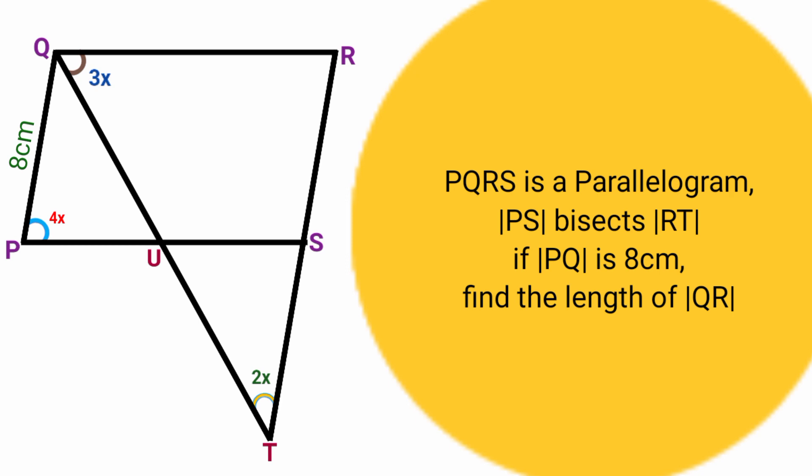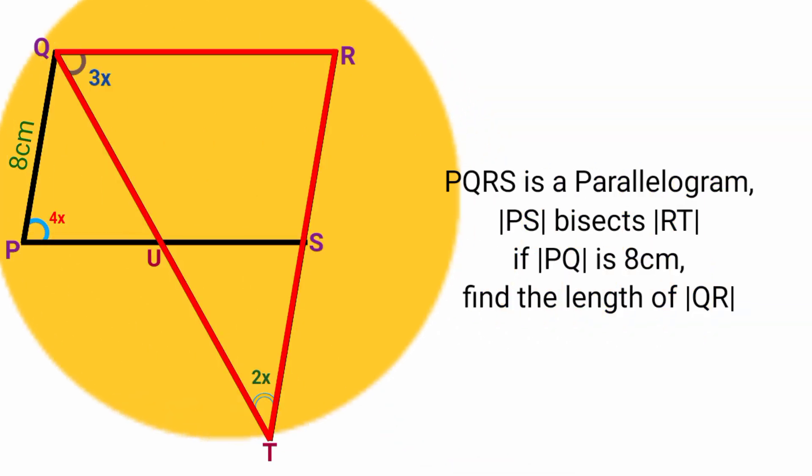How can we find the length of line QR? From this triangle, we can find the length of line QR if we have the length of one of the two other sides and the angle facing them.